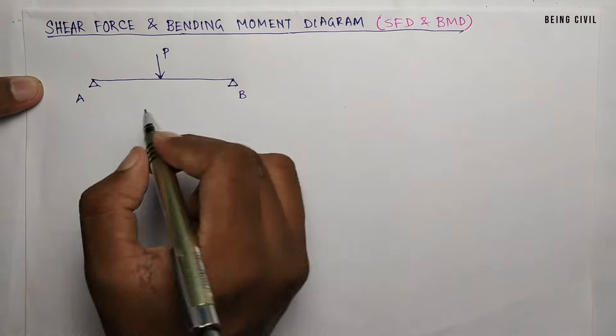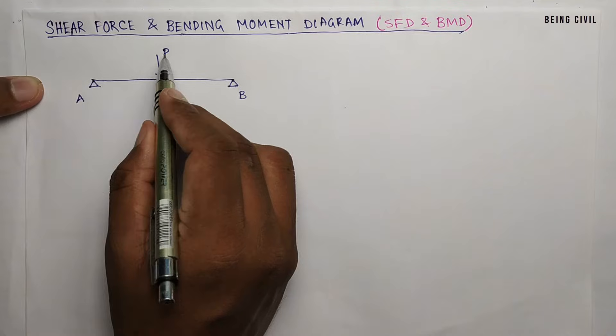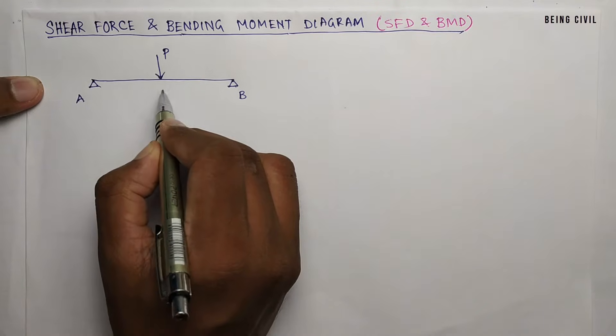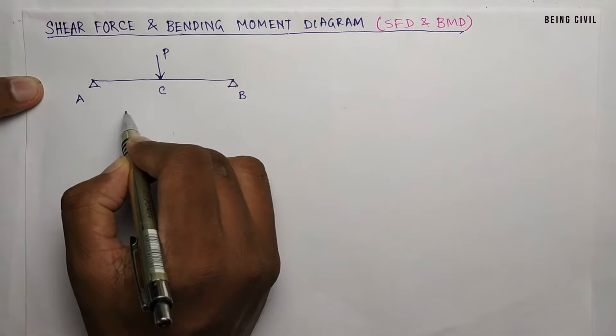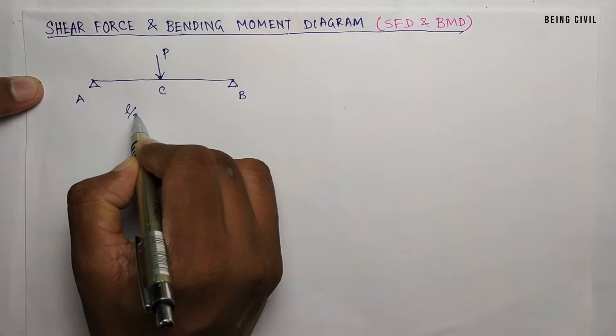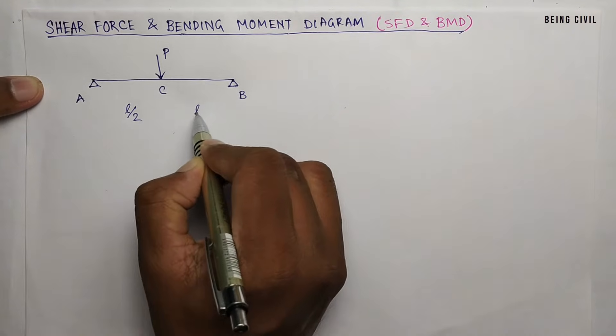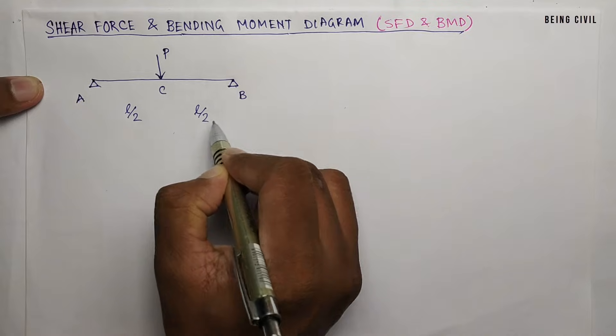So this is our beam AB and the point load P is at point C, which is the midpoint. So this is L by 2 and this is L by 2.